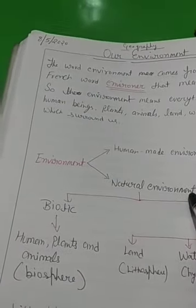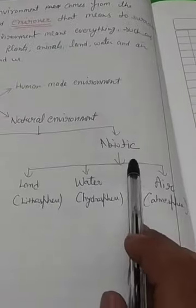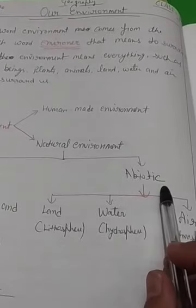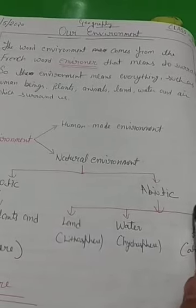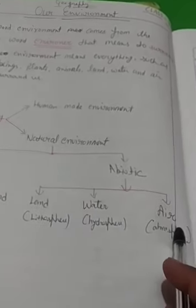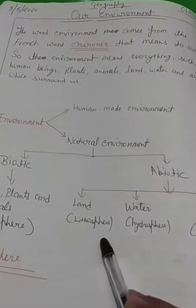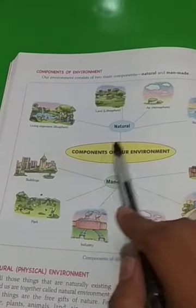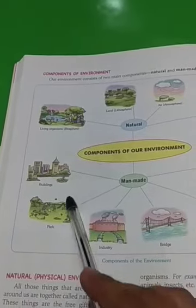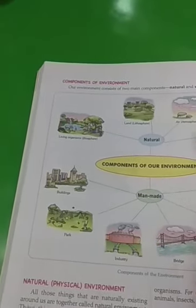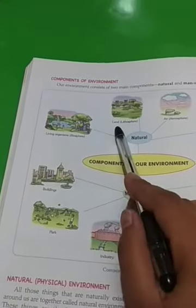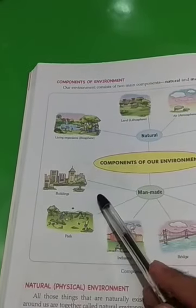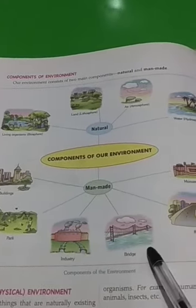Natural environment is also divided into two parts: biotic and abiotic environment. Biotic environment includes humans, plants, and animals. The abiotic environment includes land, water, and air — also called lithosphere, hydrosphere, and atmosphere. You can see in this picture the components of our environment. The natural components are living organisms (biosphere), land (lithosphere), air (atmosphere), and water (hydrosphere). The man-made components include buildings, parks, industry, bridges, roads, and monuments.